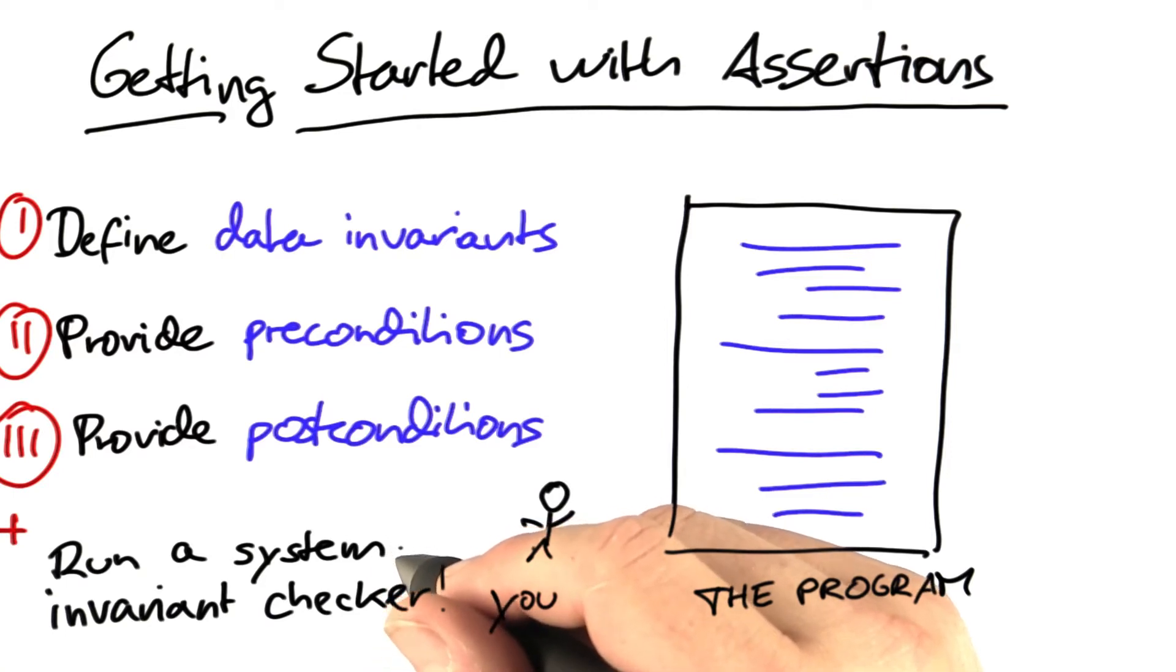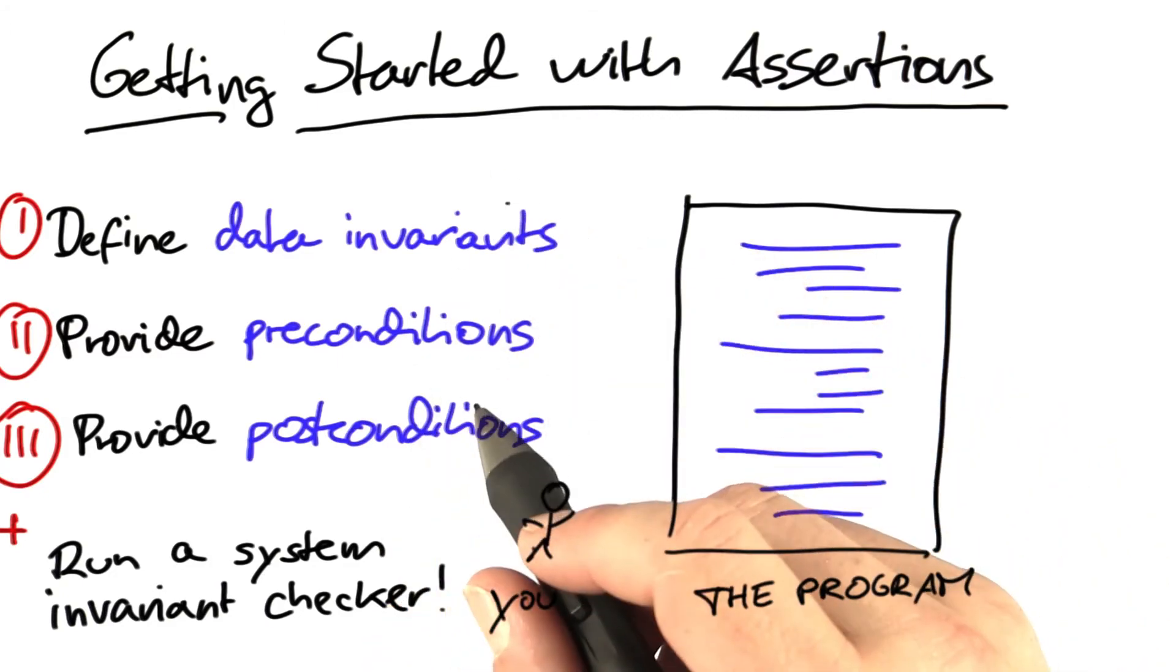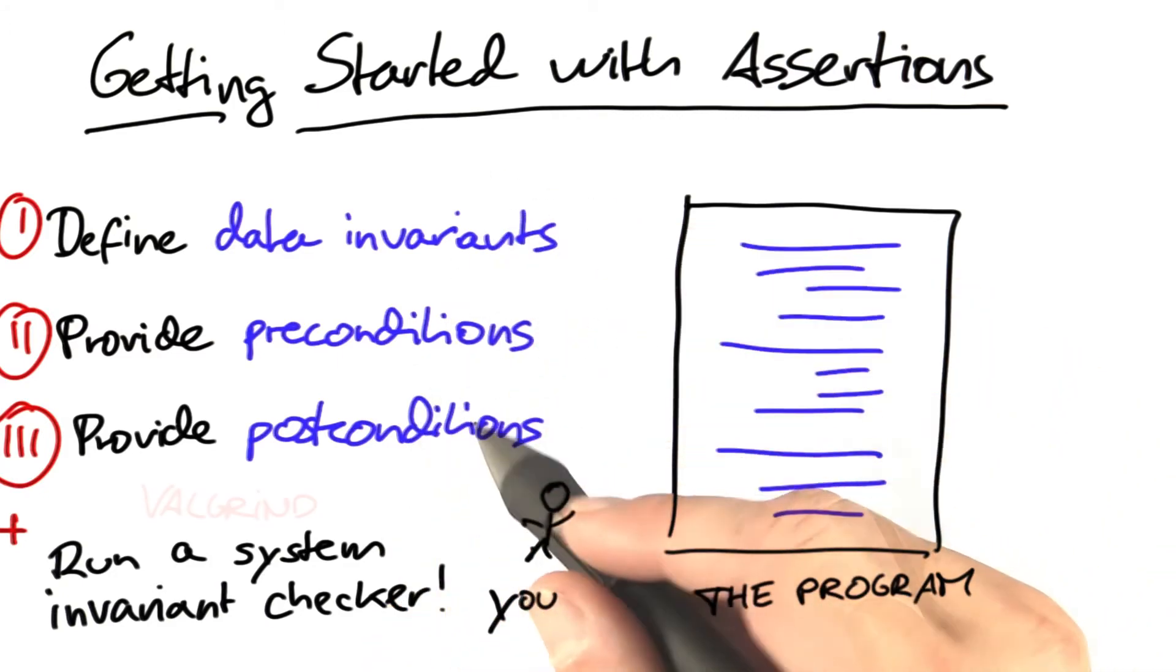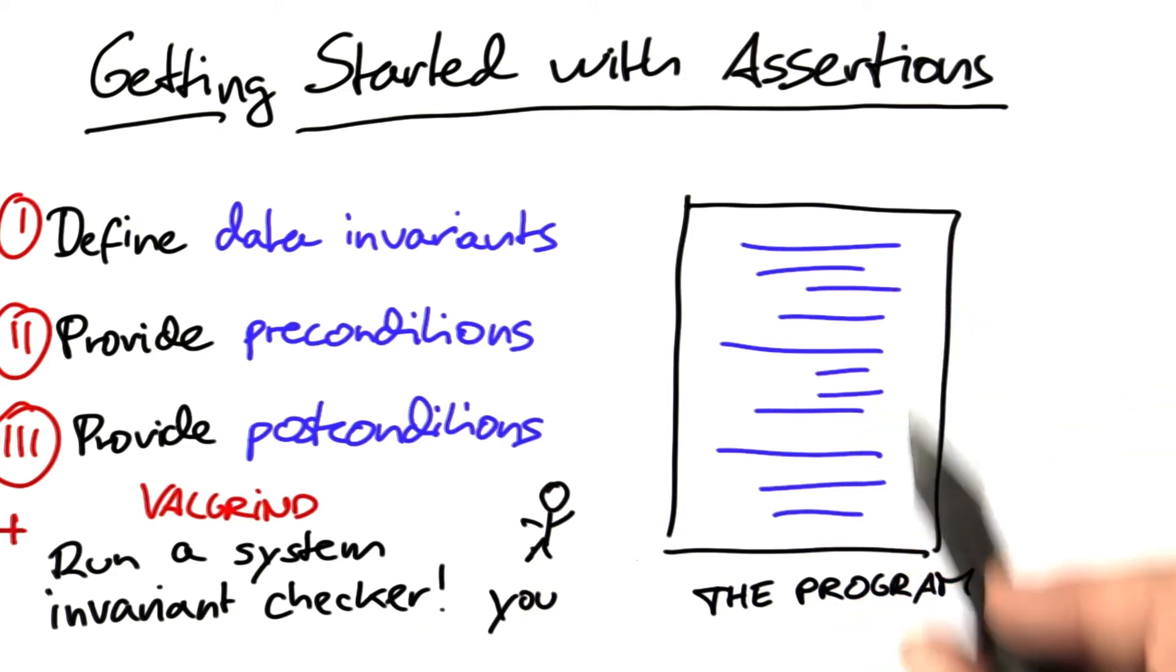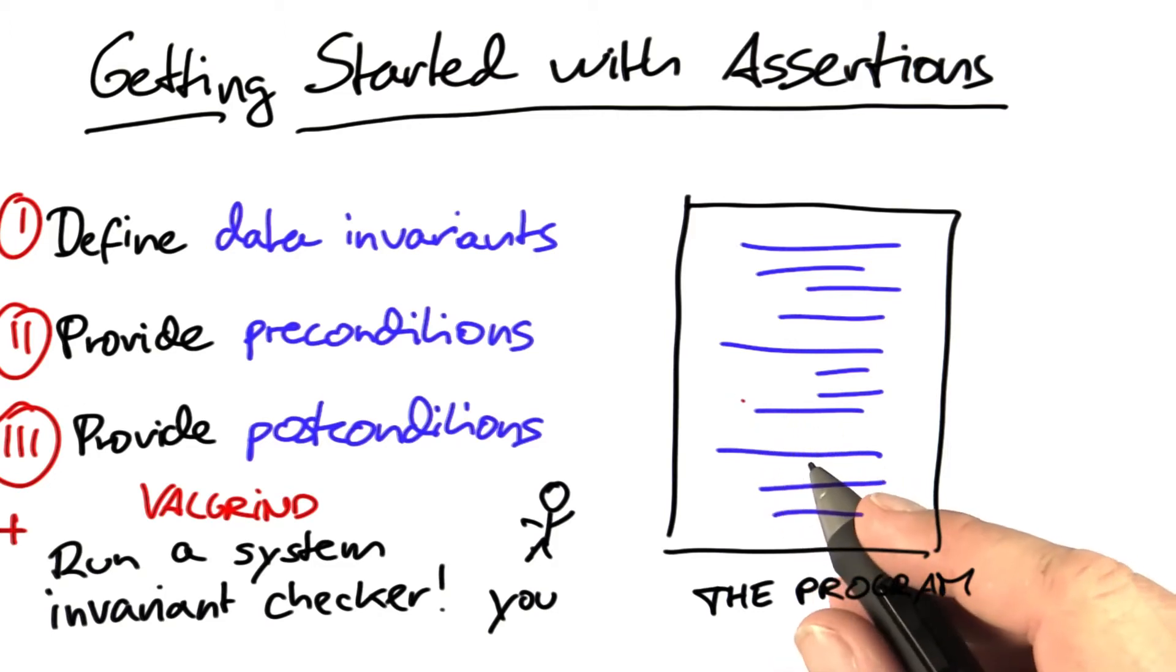and if your program does have any issues with memory corruption, then all of these other assertions are totally moot because they will come up with random results. Running a tool like Valgrind can detect lots and lots of memory issues, and all it takes is to run your program once with Valgrind enabled.